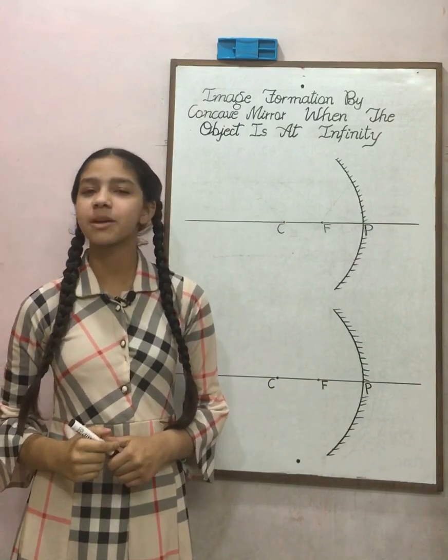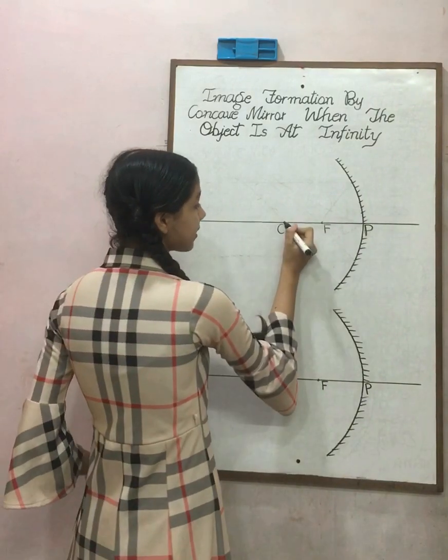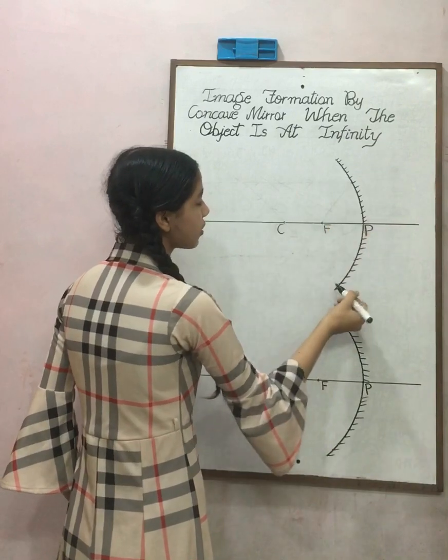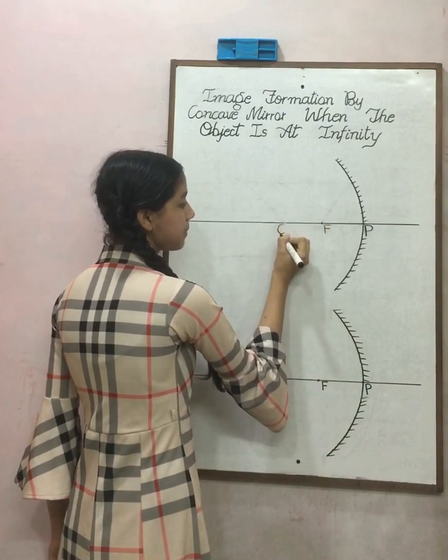First of all, we will know about some of the main points. The first is, the center of the sphere whose mirror is a part is known as center of curvature. It is denoted by the capital letter C.